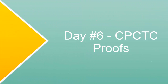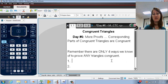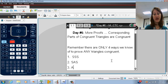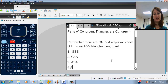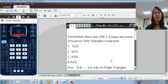Alright, for Day 6, this is our last lesson for this chapter. We're going to add one extra step to the proofs that we've been doing in class for the last couple of days. Just a quick reminder: there are only four ways that we know of to prove any triangles congruent. We have side-side-side, side-angle-side, angle-side-angle, and angle-angle-side. And then we also have the secret weapon we can use for right triangles only, and that's hypotenuse-leg.